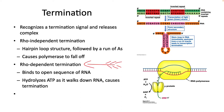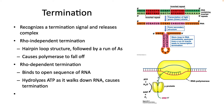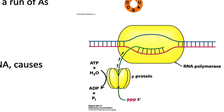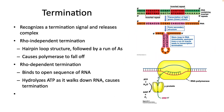In Rho-dependent termination, the Rho protein binds to a RUT site on the RNA, but only if the ribosome is not actively translating a section of messenger RNA — in other words, there has to be an open stretch of mRNA. These RUT sites have a high amount of cytosine and not much guanine, but there is no consensus on their sequence. Rho, hydrolyzing ATP as it goes, chases down the RNA polymerase, but can only catch it if the polymerase stalls. Rho then disrupts the RNA-DNA helix, releasing the polymerase. So there are two forms of termination in E. coli: Rho-independent and Rho-dependent termination.